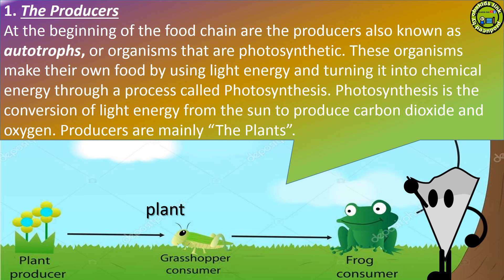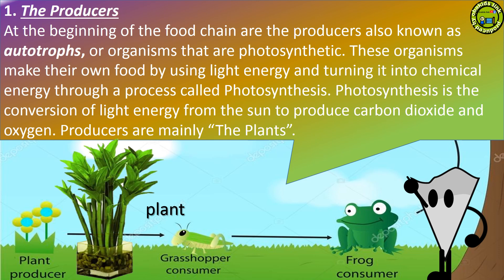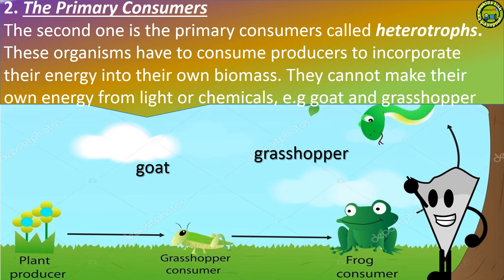Producers are organisms that are photosynthetic. These organisms make their own food by using light energy and turning it into chemical energy through a process called photosynthesis. Photosynthesis is the conversion of light energy from the sun to produce carbon dioxide and oxygen. Producers are mainly the plants, which provide energy to the primary consumers.